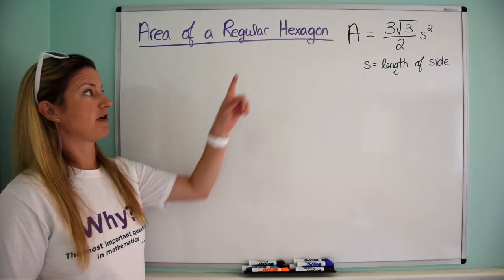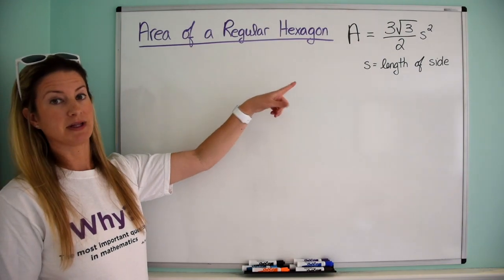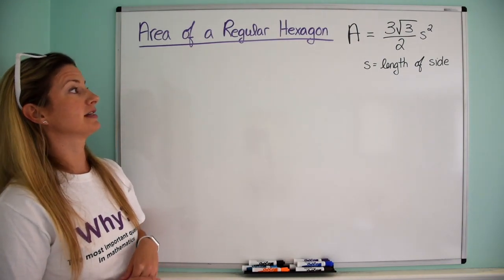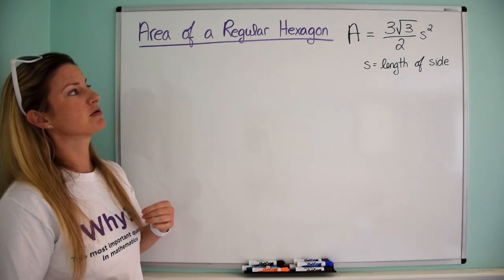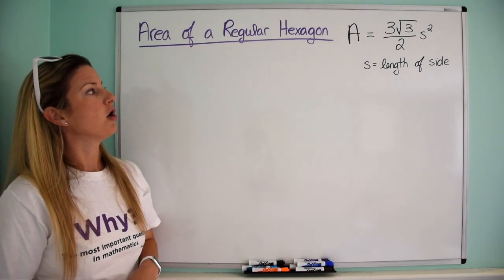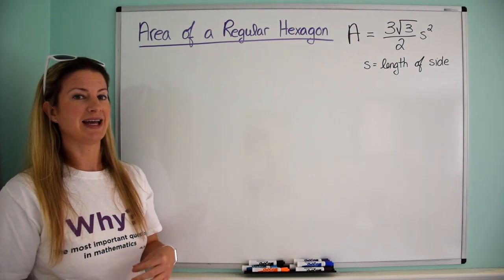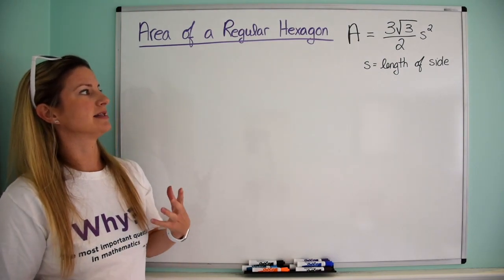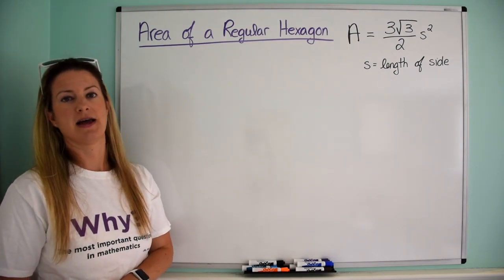Some of you may or may not know that there actually is a formula. To get the area of a regular hexagon it's just three root three over two times s squared, where s is the length of the side.